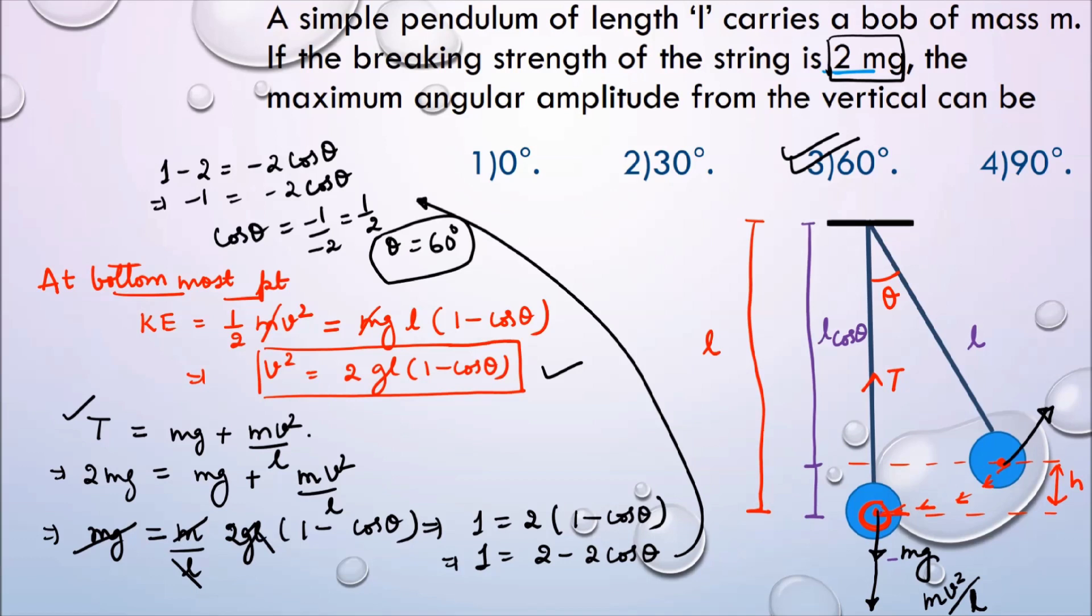So when θ is equal to 60 degrees, the tension in this string is going to be 2 mg. And if I increase the angle more than 60 degree, the tension is going to exceed 2 mg and the pendulum is going to break.